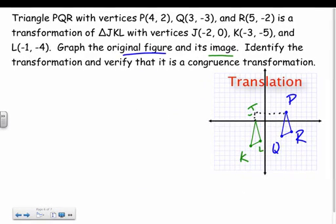All I want to do is verify that it's a congruence transformation. Well, to do that I have to prove that all the sides are still the same distance. That will prove that they're still congruent. Well, how do we find the distance of a side? Distance formula.